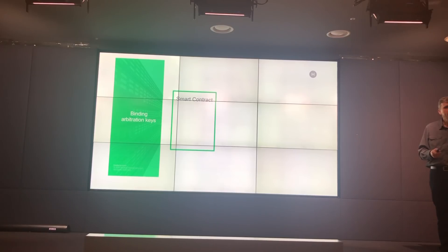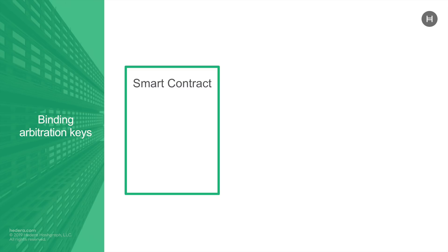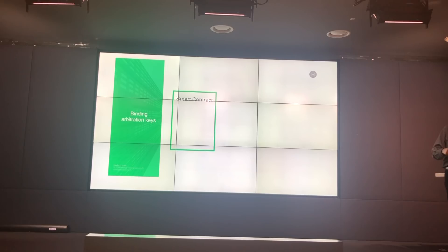Smart contracts. We have smart contracts in Solidity. If you have ever written a smart contract and run it on another platform like Ethereum, it will run on Hedera with no changes — take any smart contract on Ethereum, it runs on Hedera the same. A smart contract is a small program that you run on the ledger, and all of the nodes reach a consensus on what it did. It can actually own and control cryptocurrency itself.